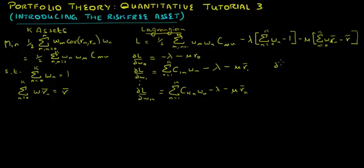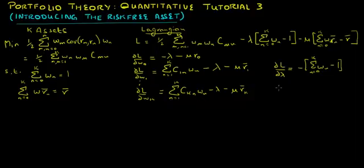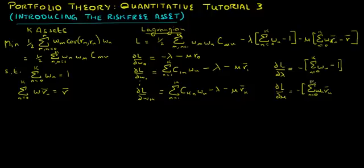Taking the derivative with respect to lambda gives negative the sum of all weights from n equals 0 to k, minus 1. Taking the derivative with respect to mu gives the negative of the weighted average return, where n goes from 0 to k, minus r-bar. We then set each of these equations equal to 0 to solve for the weights that minimize portfolio variance subject to the given constraints.